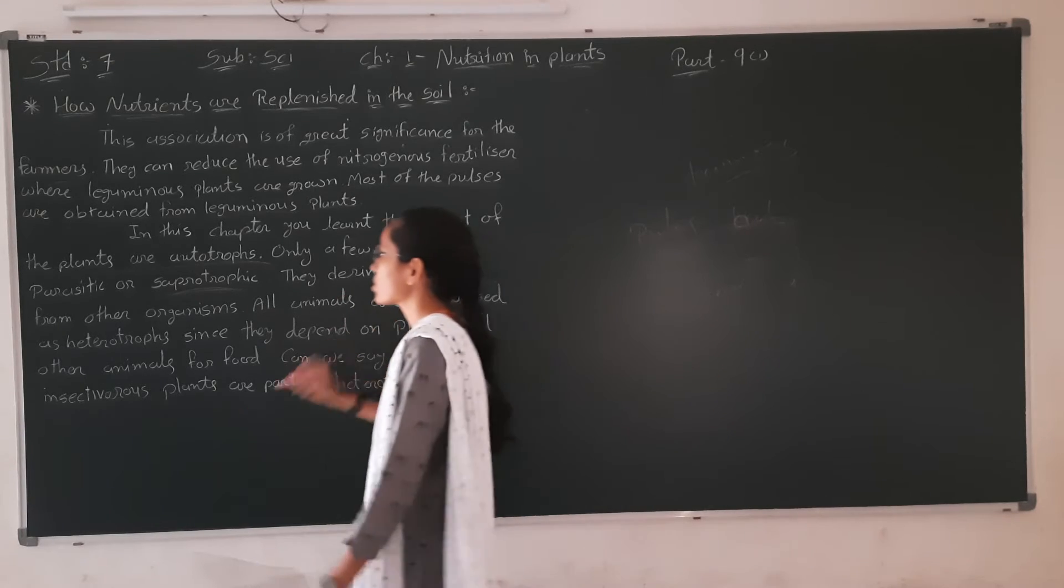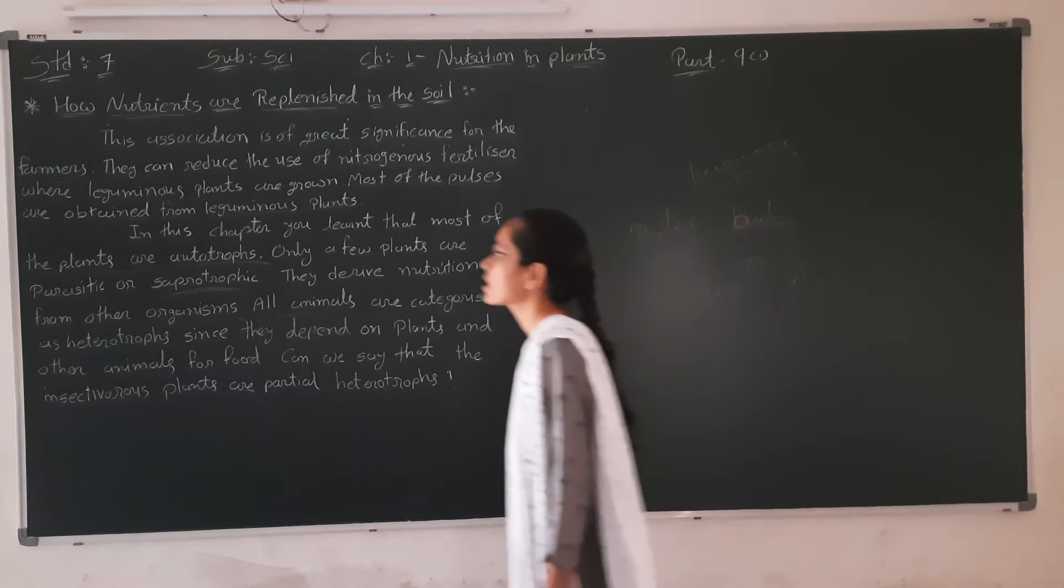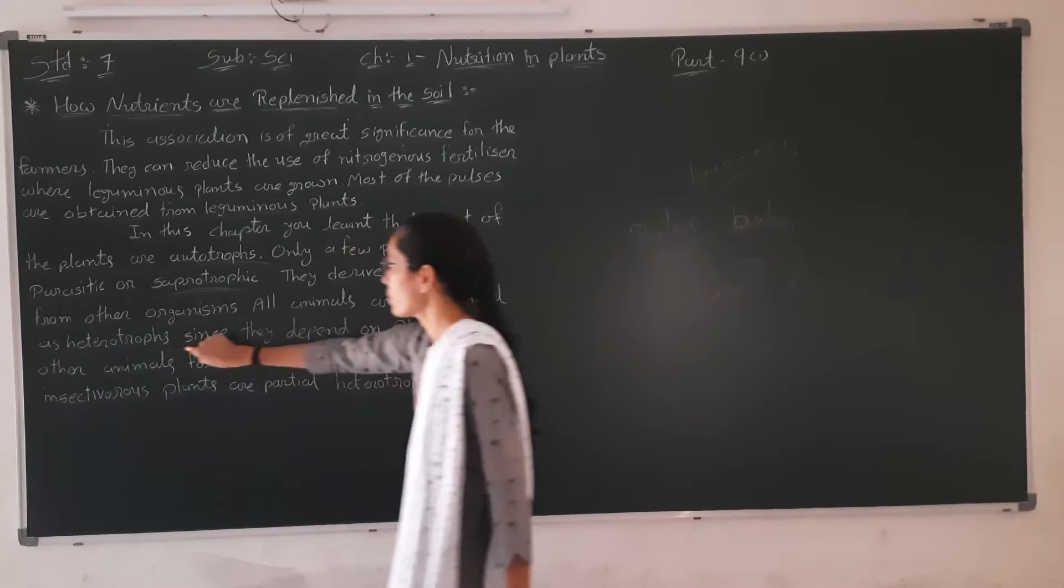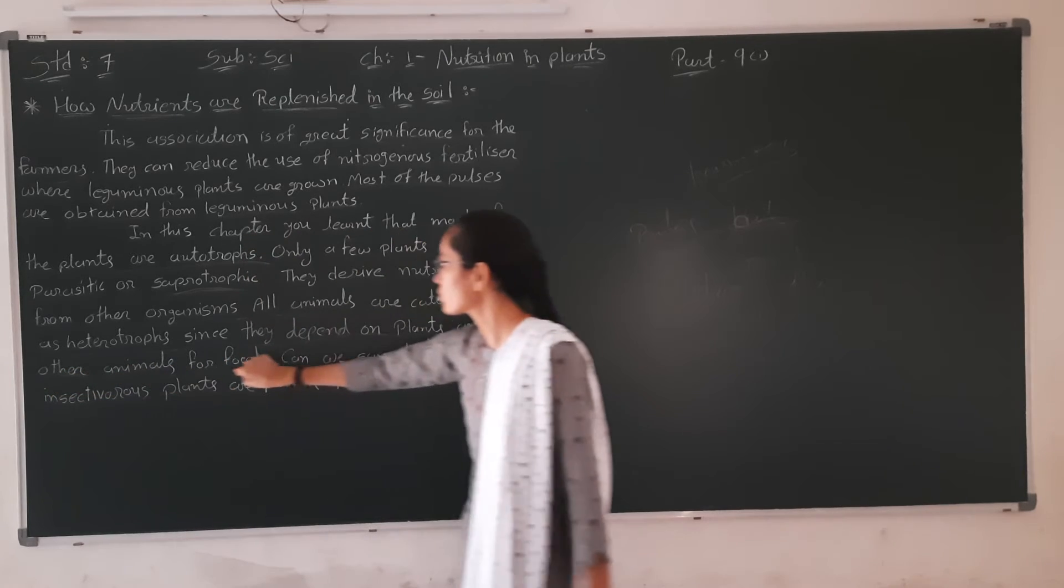Heterotrophic organisms obtain nutrients from other organisms. All animals are heterotrophic and depend on plants or other animals for food.